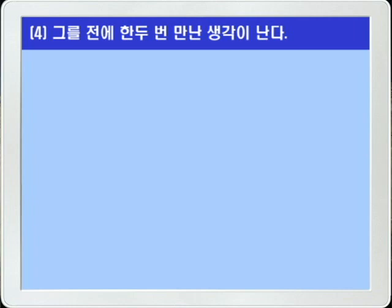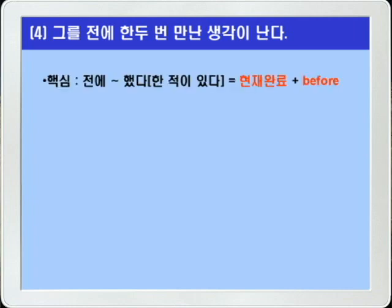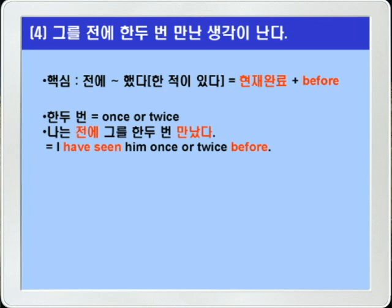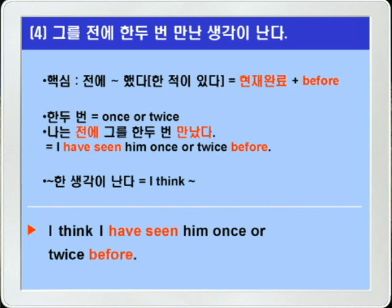4번. '그를 전에 한두 번 만난 생각이 난다.' 이 영작의 핵심은 '전에 ~했다' 혹은 '~한 적이 있다' — 현재까지의 경험을 나타내니까 현재완료 + before를 써서 표현하는 것이 되겠습니다. '한두 번'은 once or twice, 전에 한두 번 하면 once or twice before 이렇게 하면 되는 것입니다. 만난 적이 있다니까 현재완료를 써서 'I have seen him once or twice before' 이렇게 쓰면 되겠죠. 여기에 나는 뭐뭐한 생각이 난다 — I think를 연결하면 되겠습니다. 정답: 'I think I have seen him once or twice before.'